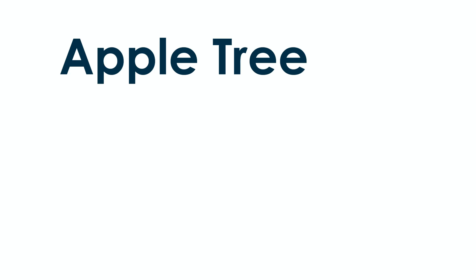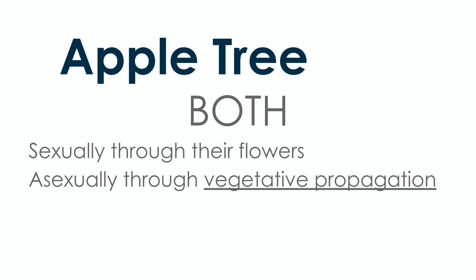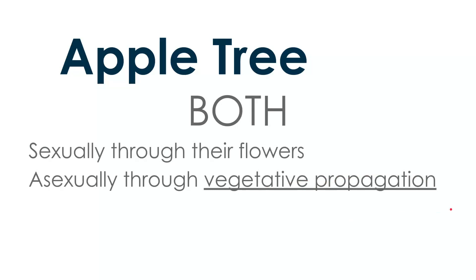Apple trees — do they reproduce sexually, asexually, or both? They actually reproduce both ways. They reproduce sexually through their flowers, and they also reproduce asexually through a process called vegetative propagation. That's something you should write down — vegetative propagation.